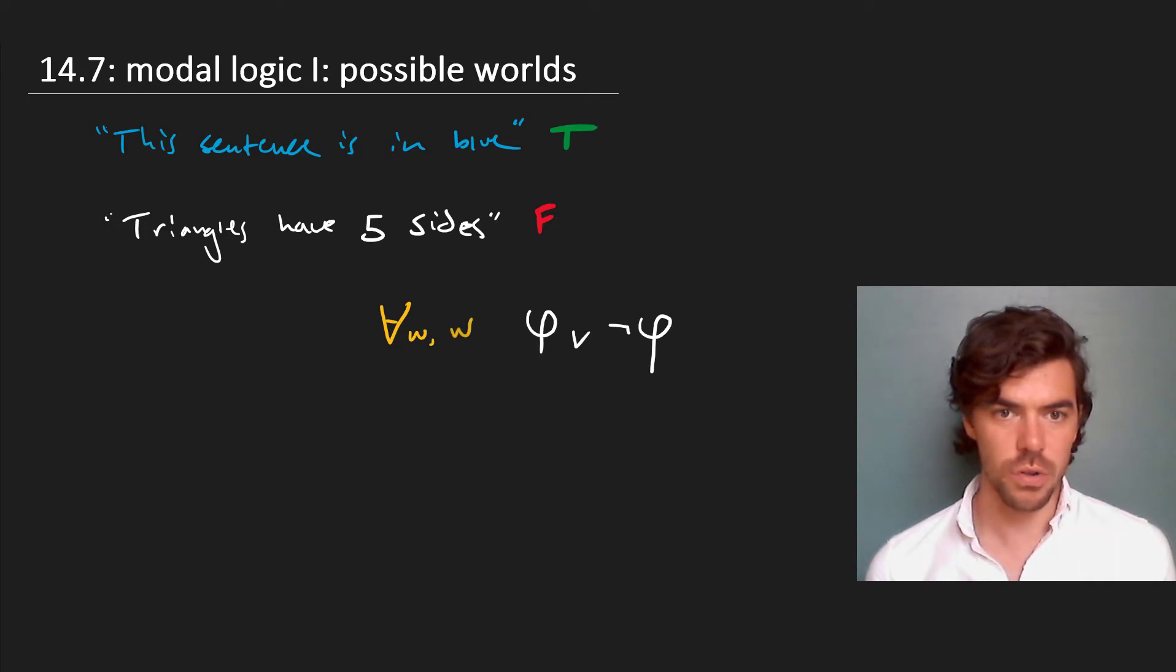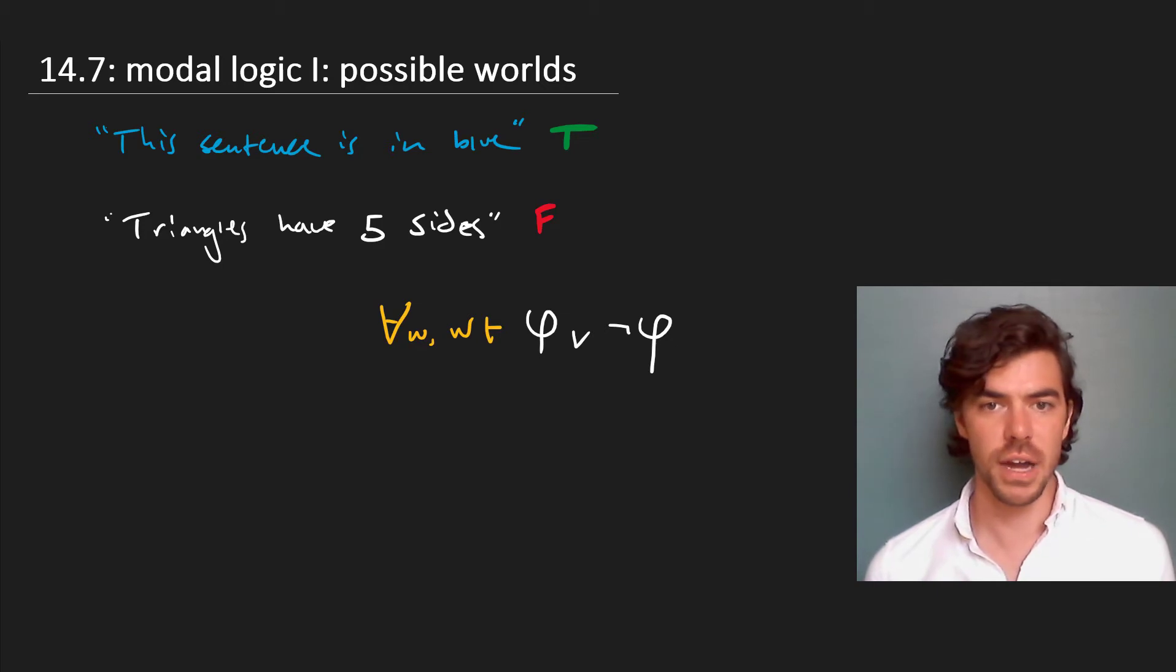We'll say for every world, the world—we'll write this T here—makes true phi or not phi. And what that tells us is that this expresses a necessary truth.